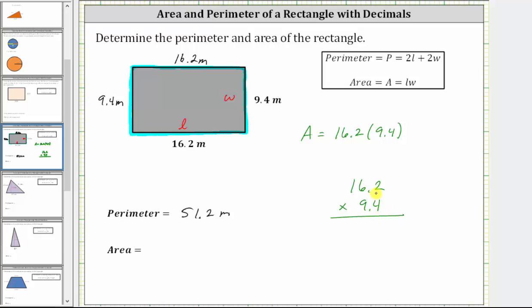We begin by multiplying by the four. Four times two is eight. Four times six is 24. Record the four. Perform an exchange with the two. Four times one is four, plus two is six.